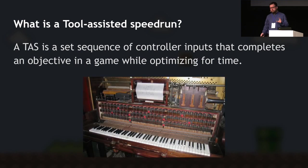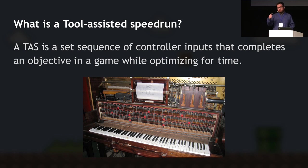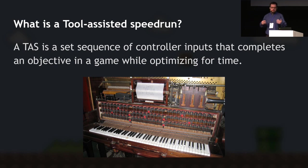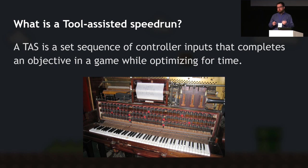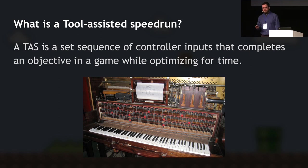It's very comparable to a player piano — mechanical pianos with rolls of paper with holes that tell the piano which note to play. If you have the correct roll, you can hear any song you want. The exact same thing happens with tool-assisted speedruns: you create a sequence of buttons, and once you play that sequence back, the game essentially beats itself.